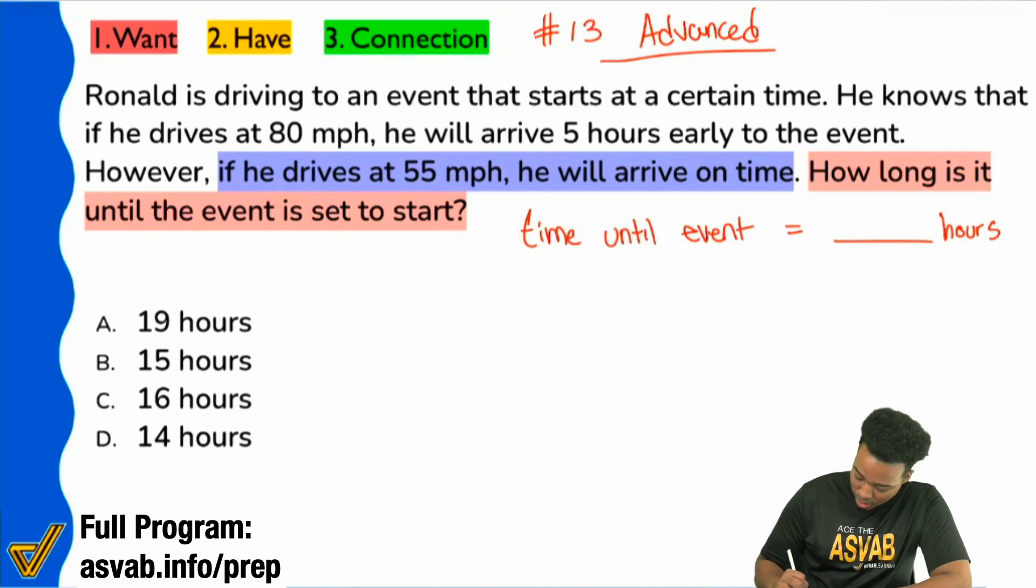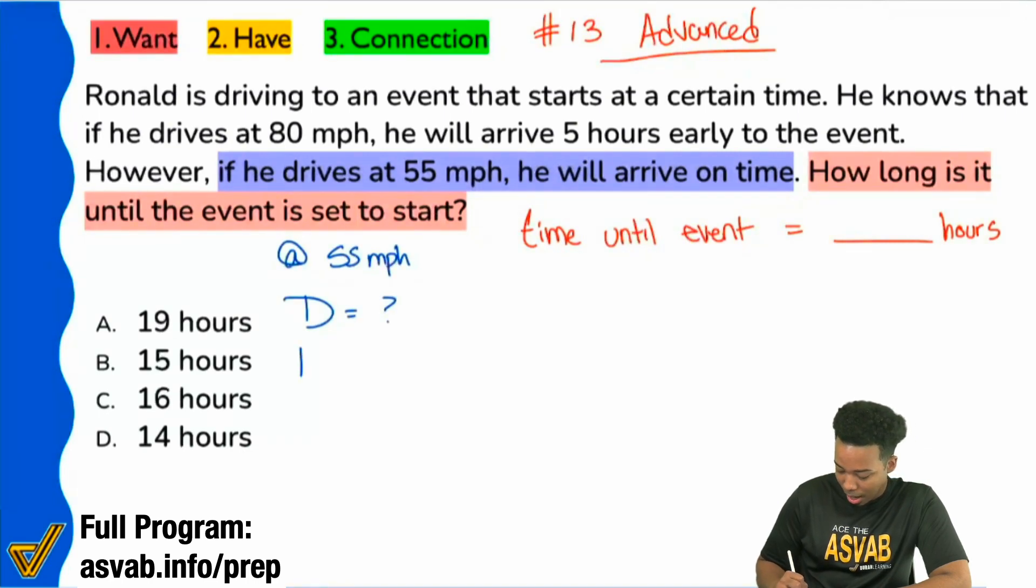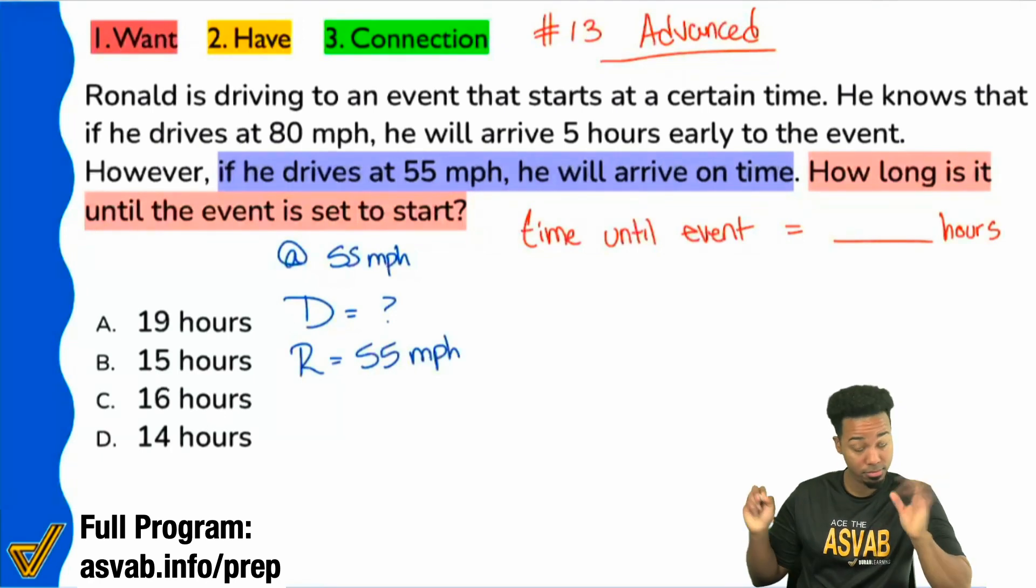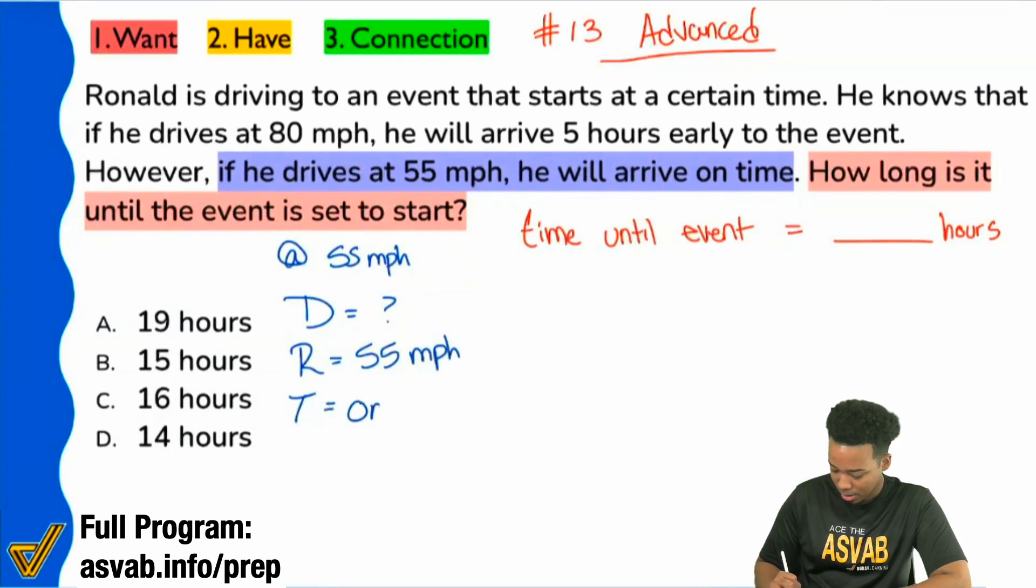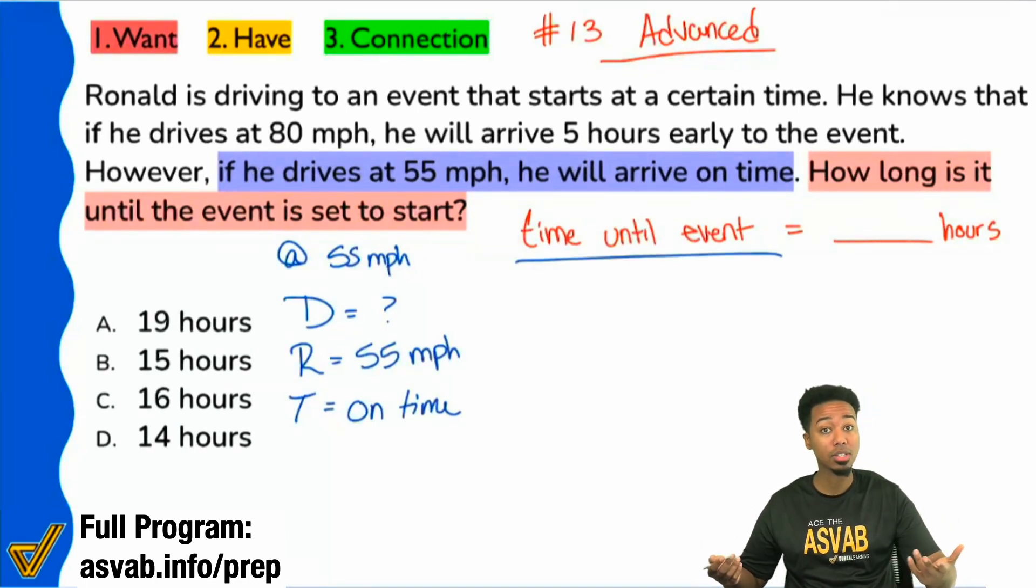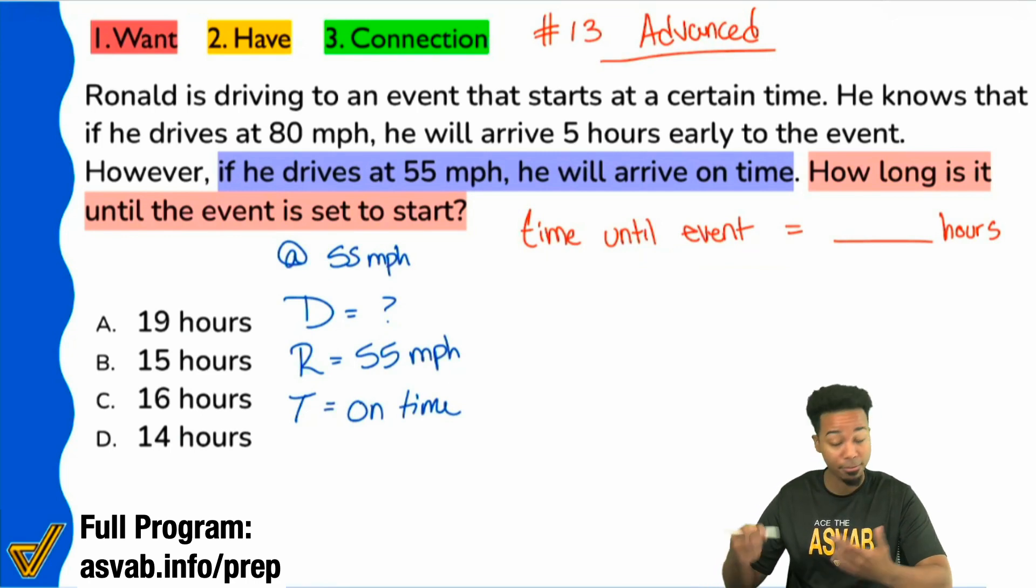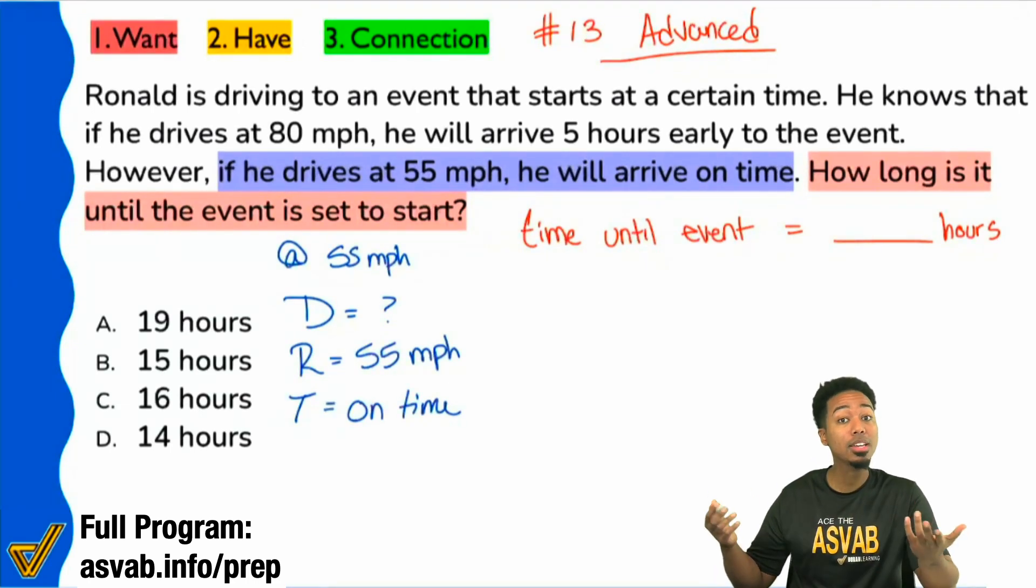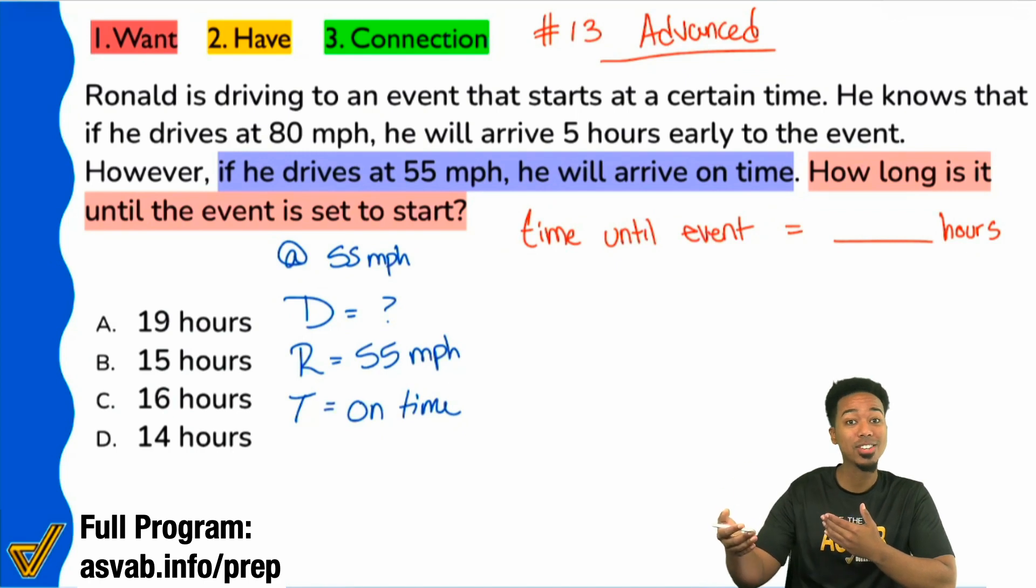Let's go. So here, I'll go ahead and say here, at 55 miles per hour, our distance, we don't know. Our rate, 55 miles per hour, correct? And then the time, well, the time is on time, which again, that would be what we're looking for, the time until the event starts. So the amount of time it takes for him driving at 55 miles per hour would be how long it'll be until the event starts. So that's a really good thing for us. And so I'll just go ahead and mark this, I'll just leave it as T.